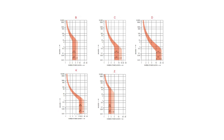As you know, the trip current is the value of current at which the breaker will trip instantaneously. We choose these curves depending on our load type, because some loads have high inrush current at starting which can cause false tripping for the miniature circuit breaker.